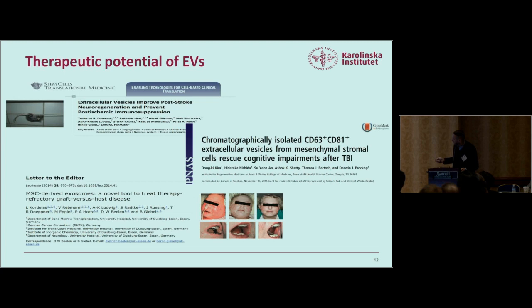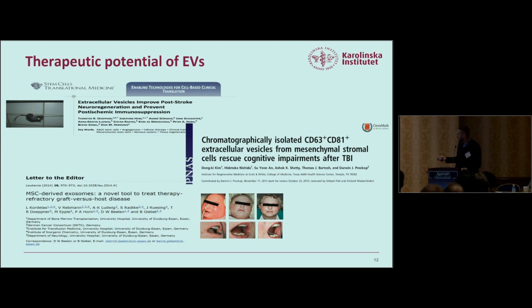Three key papers illustrate MSC exosome effects. Dirk Herrmann and Bernd Giebel showed these EVs can improve post-stroke neuroregeneration with similar potency to stem cells alone. A paper published in PNAS showed that chromatographically isolated MSC exosomes can rescue cognitive impairment after traumatic brain injury. The last paper is the first, and to my knowledge only, paper showing potency of MSC-derived exosomes in patients suffering from graft-versus-host disease.